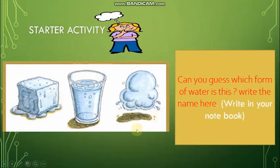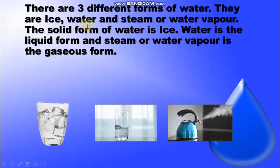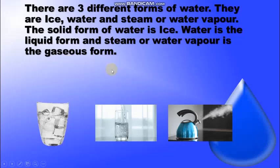This is your starter activity. You need to draw this in your notebook and write the names of the images. There are three different forms of water: ice, water, and steam or water vapor. The solid form of water is ice, the liquid form is water, and the gaseous form is steam or water vapor.